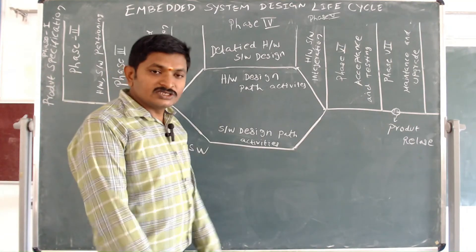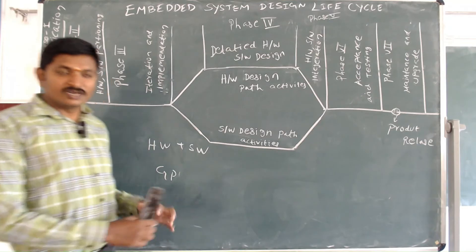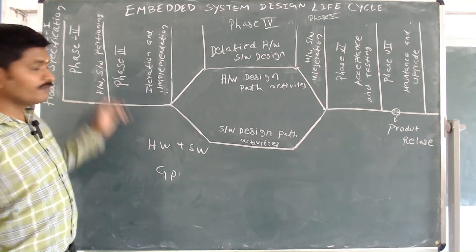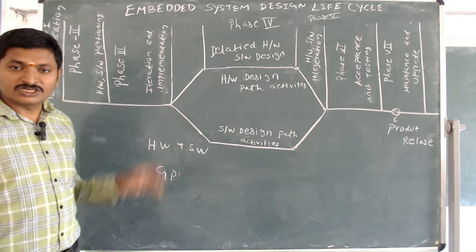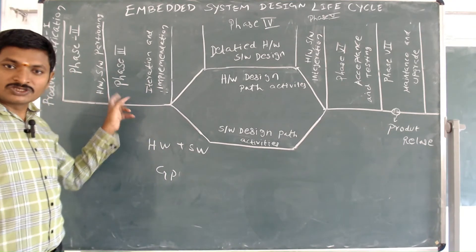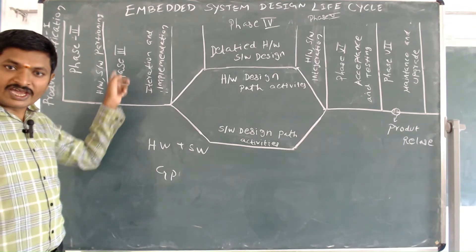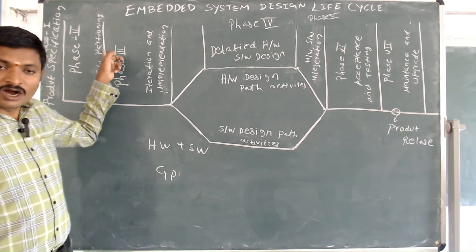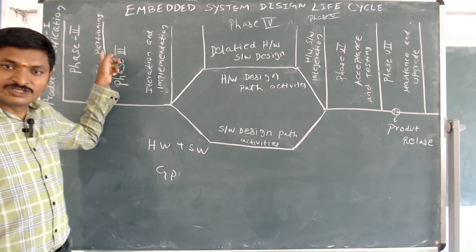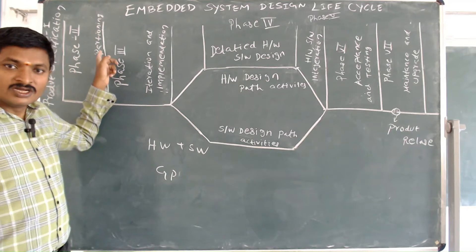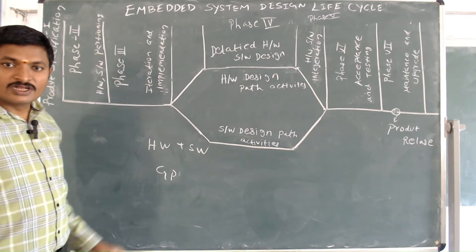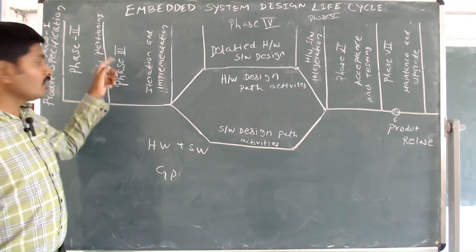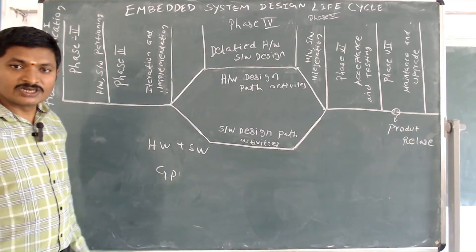In phase two, once the problem is defined, we move to hardware software partitioning. This defines which portion of the problem is solved in hardware and which portion is solved in software.